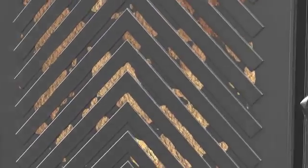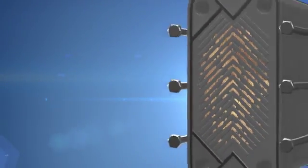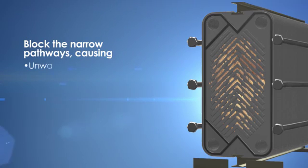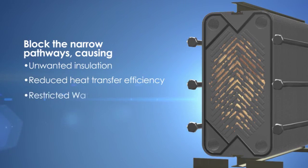Over time, accumulated scale, along with biofilm that consists of bacteria and algae from the process liquid, block the narrow pathways, causing unwanted insulation, reduced heat transfer efficiency, restricted water flow, and higher energy consumption.